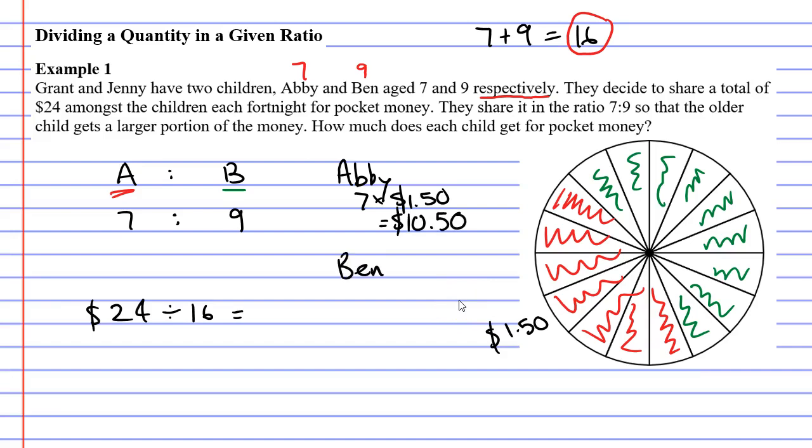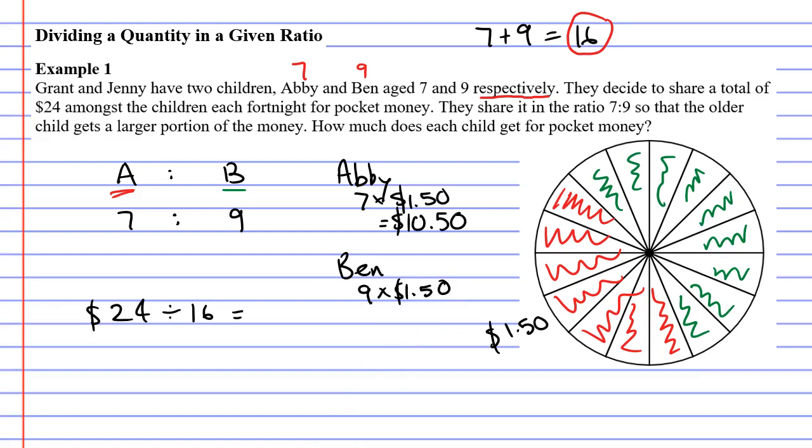Ben gets nine pieces of pizza. So nine times $1.50. What is nine times $1.50? $13.50.